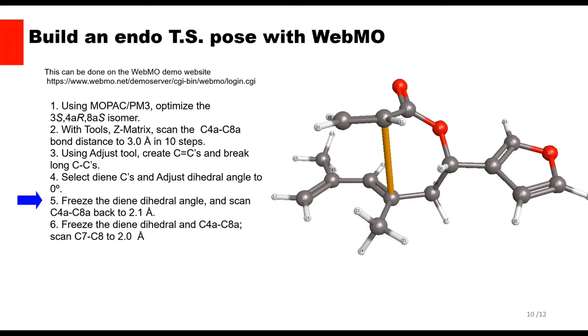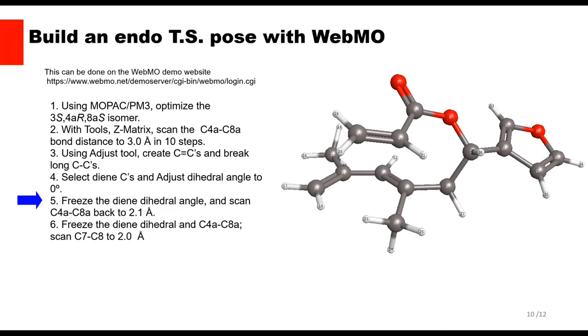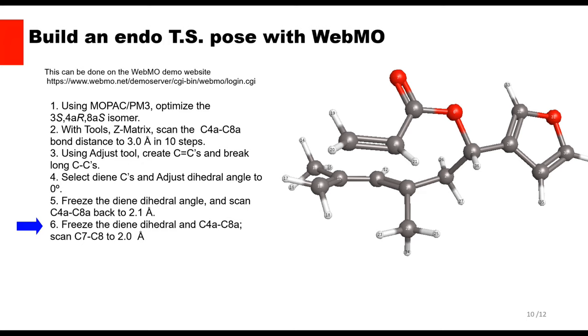Here I did the same at the other end of the dienophile, except that three items had to be set in the ZMatrix editor. Freeze the diene dihedral angle to keep it flat. Freeze the C4A, C8A distance at 2.1 angstroms. And scan the terminal carbon distance, C8 and C7 in the product, down to about 2 angstroms.